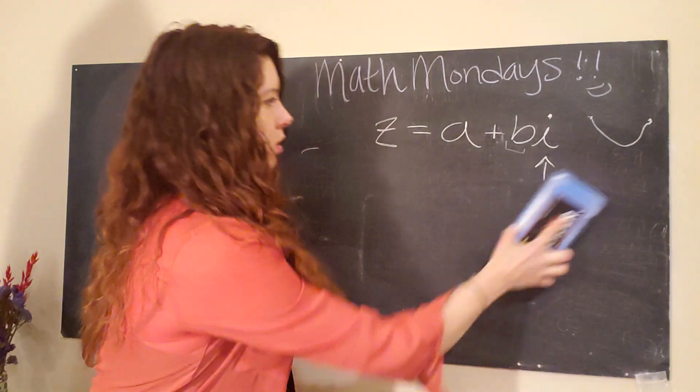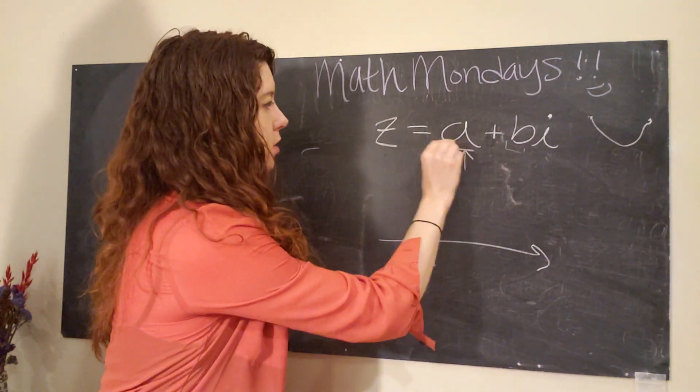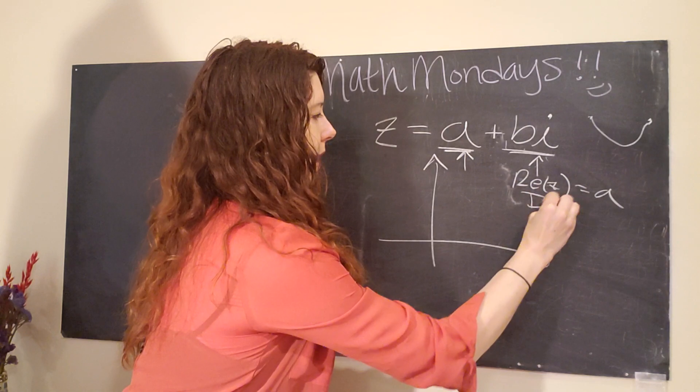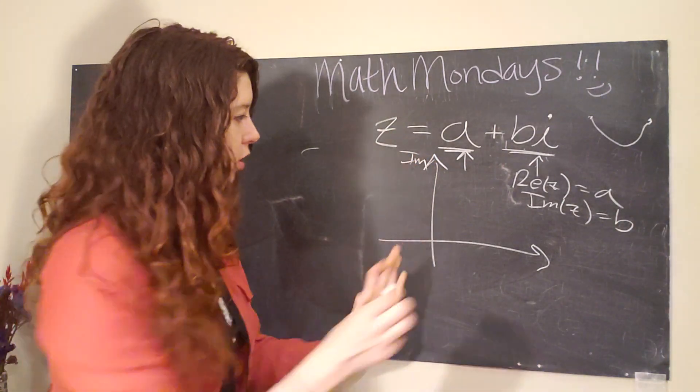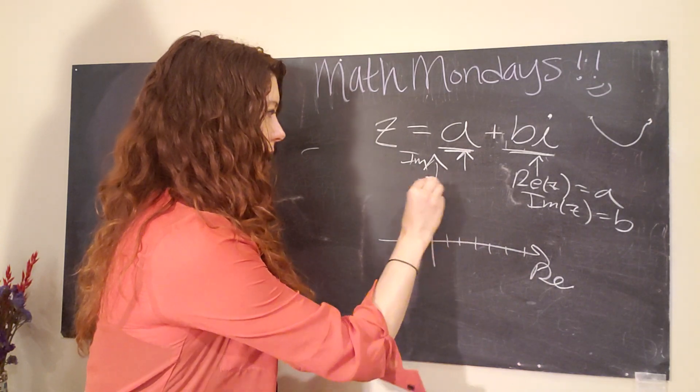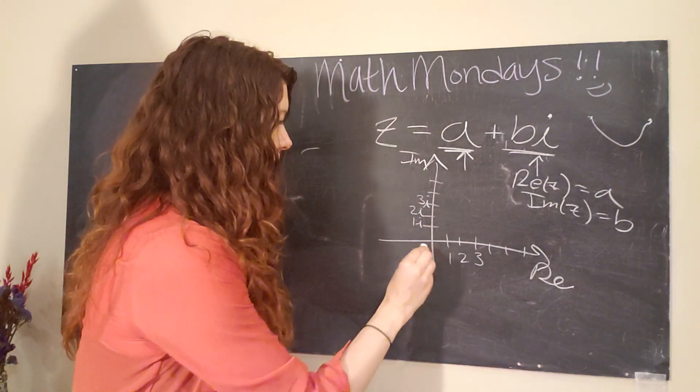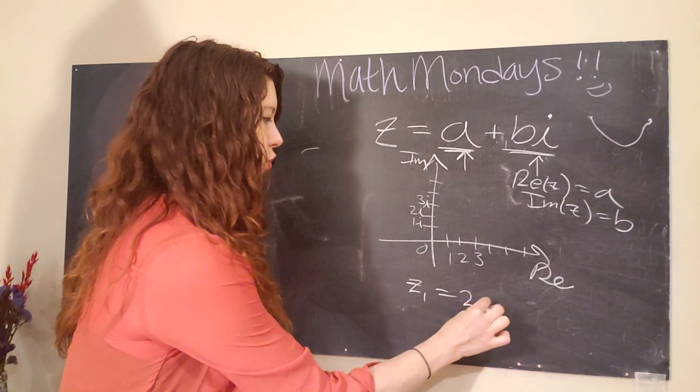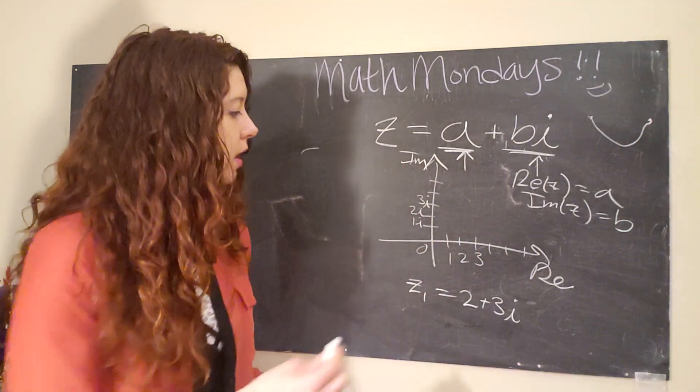What does that look like on a graph? So when we have complex numbers which are composed of a real part and an imaginary part—we would say the real part of Z is a and the imaginary part of Z is B—we can plot it like this. Typically, we put the imaginary number line on the vertical axis and the real number line on the horizontal axis. And these are just going to be your standard old integers or fractions or whatever. But then you would say these have a little I next to them.